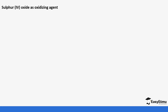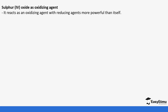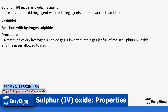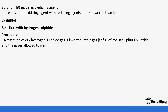Sulfur dioxide can also act as an oxidizing agent — it reacts as an oxidizing agent with reducing agents more powerful than itself. For example, it can react with hydrogen sulfide (H₂S). If you put dry hydrogen sulfide in a gas jar inverted with sulfur dioxide and allow the gases to mix, one of the things you notice is a yellow deposit. This is one of the most commonly tested experiments because of the reducing nature of hydrogen sulfide.